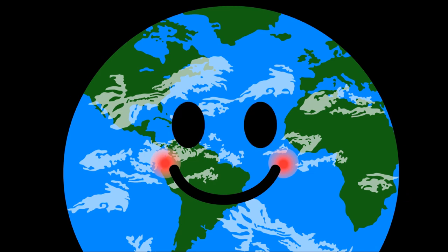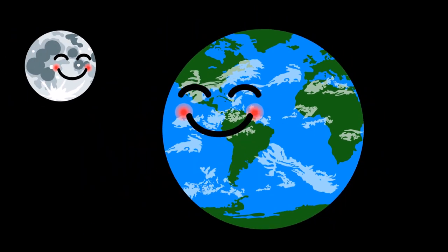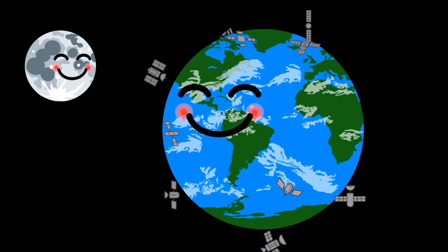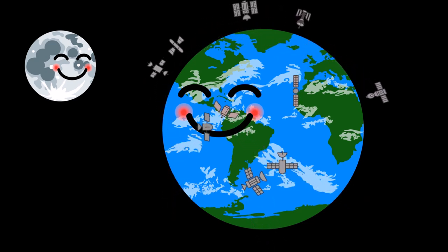Earth has a natural satellite, the Moon, and has thousands of artificial satellites that orbit around our planet.